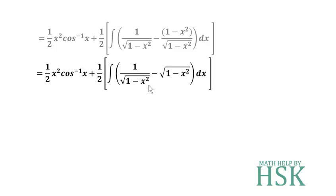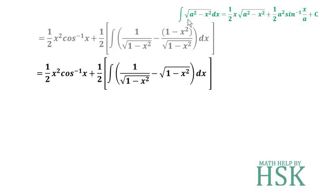The integral of 1/√(1 − x²) can be written as −cos⁻¹(x), chosen to match the form already in our expression. To integrate √(1 − x²), we apply the formula: ∫√(a² − x²) dx = (1/2)x·√(a² − x²) + (1/2)a²·sin⁻¹(x/a). Here a = 1, so a² = 1.